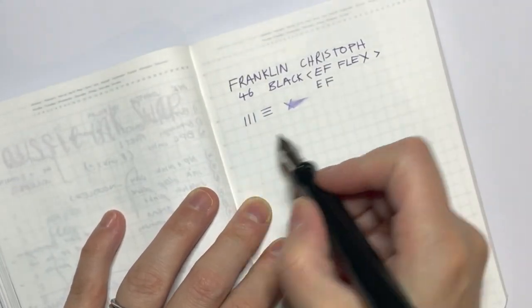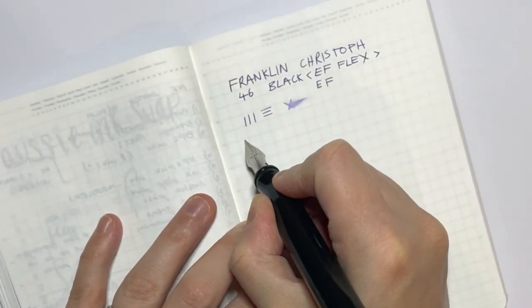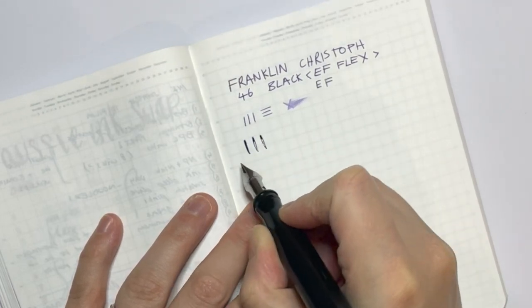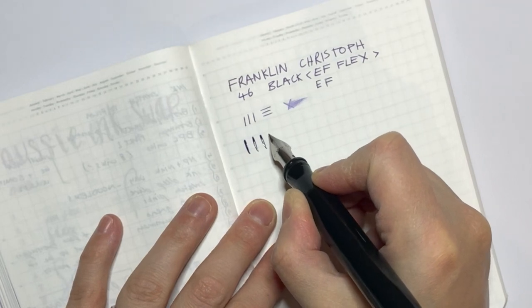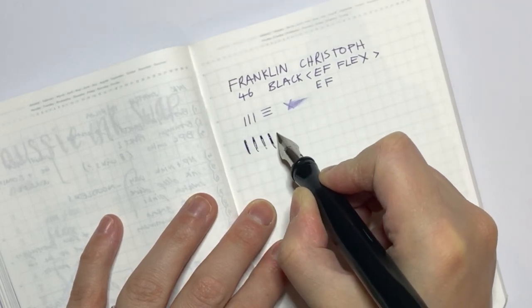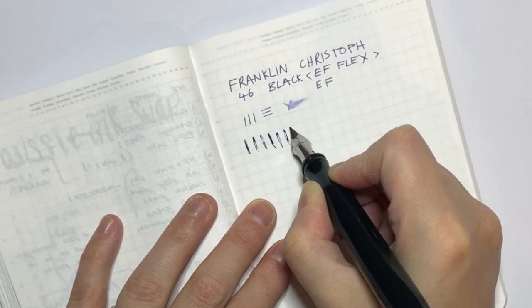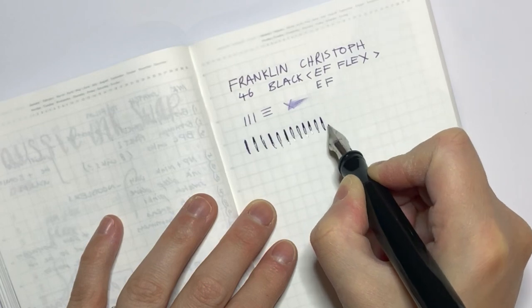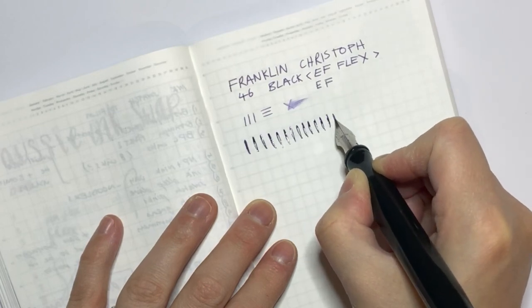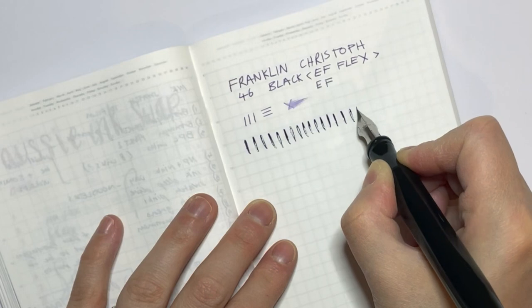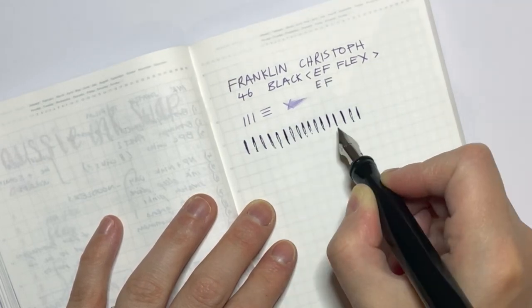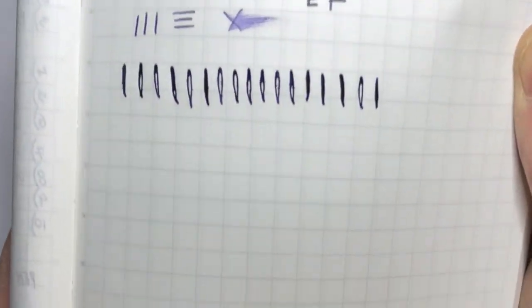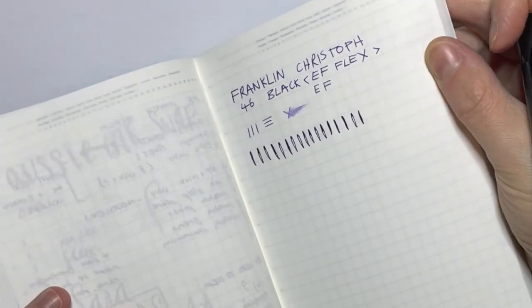So if I am to then flex now, you're not going to get crazy line variation because it is still an extra fine. And if you go too fast, you can see that you do get railroading. So this is going fast, and now I'm going to get progressively slower and also just lighten up my pressure a little bit.